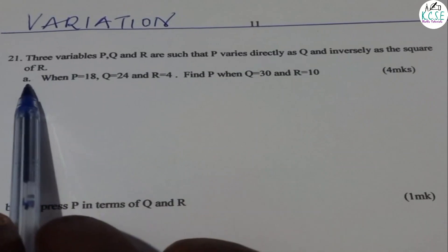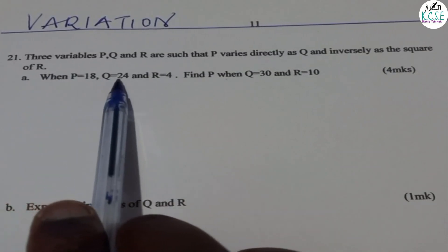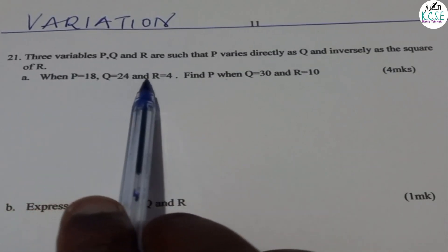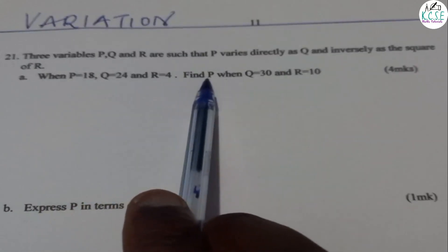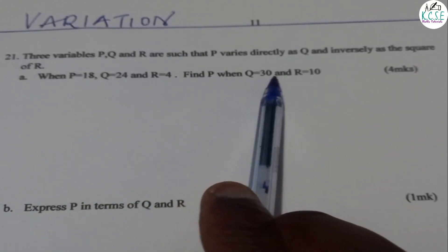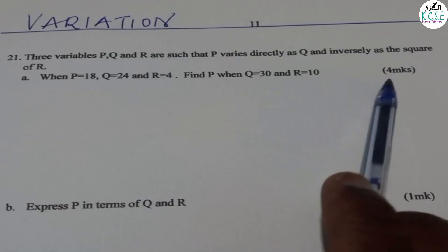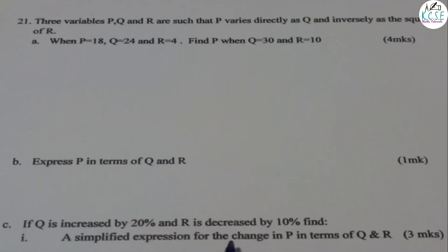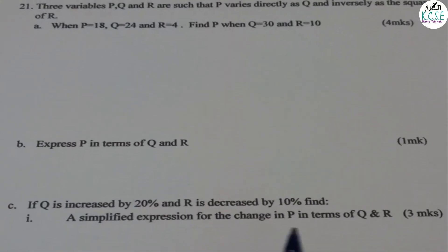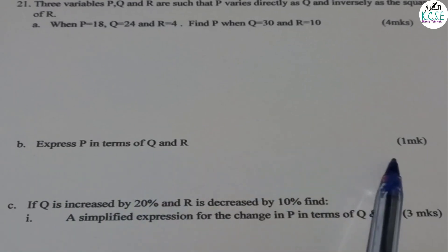Part A: When P equals 18, Q equals 24, and R equals 4, find P when Q equals 30 and R equals 10. That is 4 marks. Part B: Express P in terms of Q and R. 1 mark.